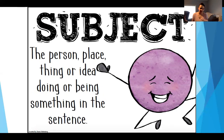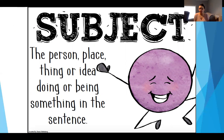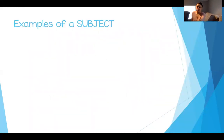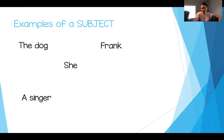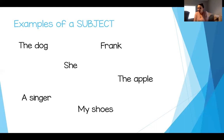The subject is the person, the place, the thing, or the idea that is doing or being something in the sentence. The subject is which part of speech? It's a noun — because a noun is a person, a place, or a thing. So the subject is the noun in the sentence; it's who or what the sentence is going to be about. Here are some examples of subjects: the dog, Frank, she, a singer, the apple, or my shoes. It can be an object, a person, an animal, or an idea — but it has to be a noun that tells whoever's reading your sentence what it's about. A subject is the noun, the who, or the what in the sentence.